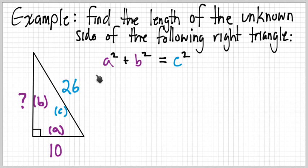So in place of A, we're going to write 10 and that'll be squared. Plus B squared. But we don't know what B is, so we're just going to leave that as B. Squared equals C squared. And C, we know, is 26, squared.